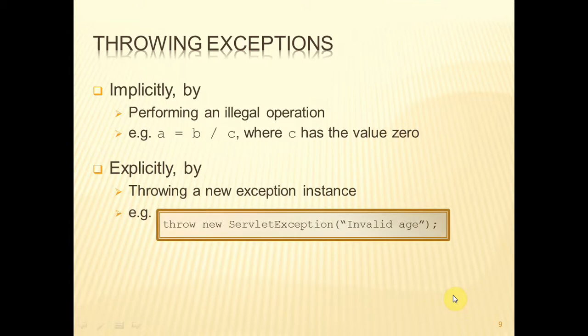For example, within our servlets, we can throw a new servlet exception. So we use the reserved word throw, and then we create a new instance of the servlet exception class. And the string that we put here is essentially the error message, and we'll be able to retrieve that error message at some other point.